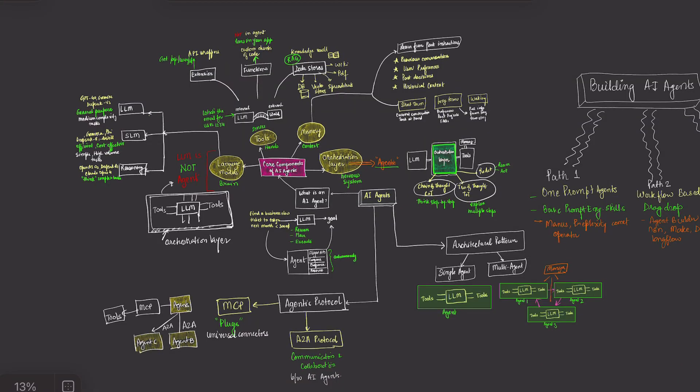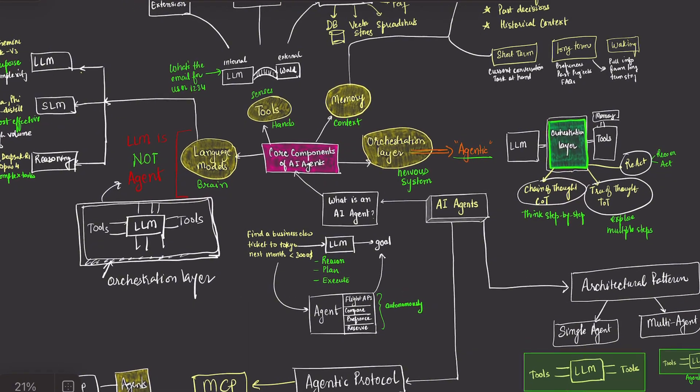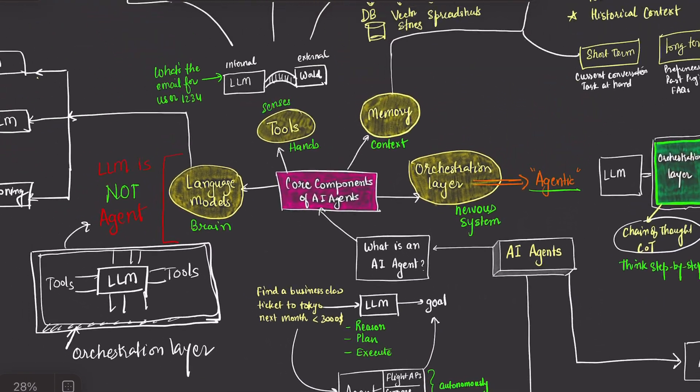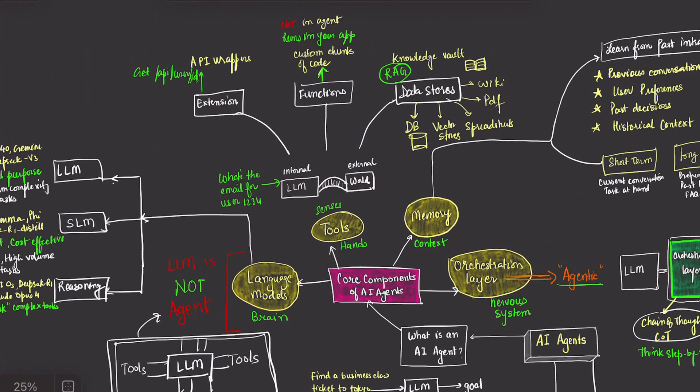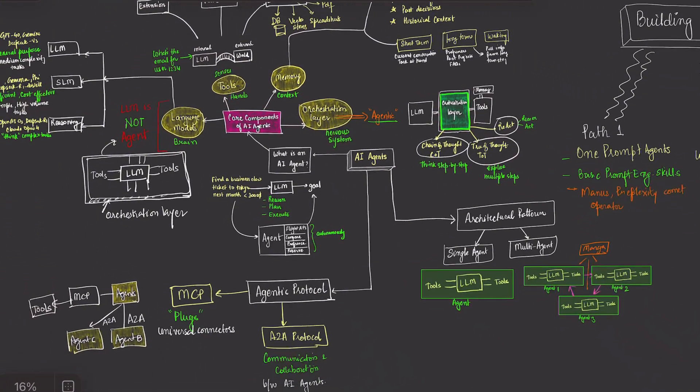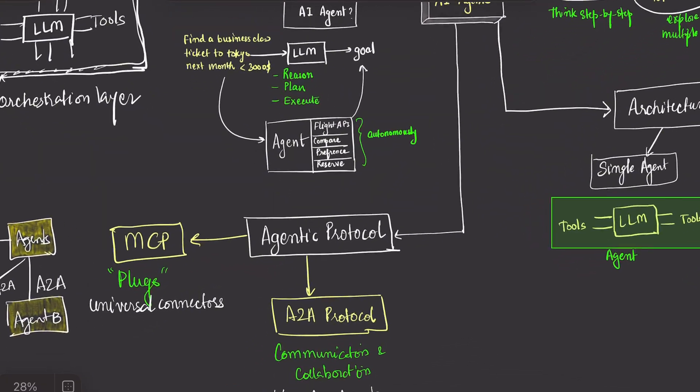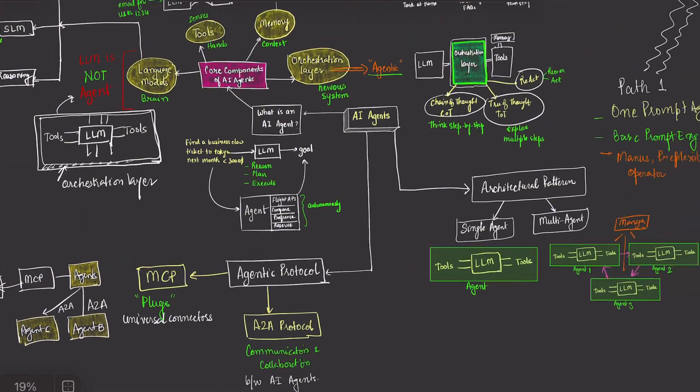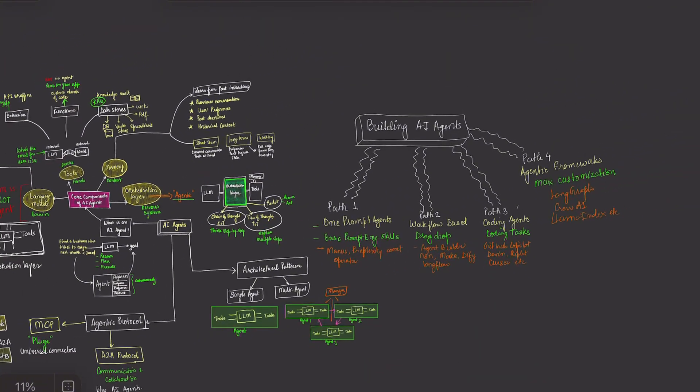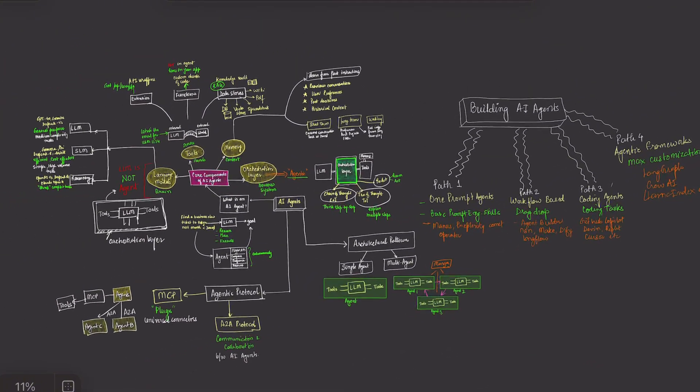And there you have it. AI agents demystified. You now understand the four core components that make every agent work. The language model brain, and the tools that are its hands in memory, that help it learn, and the orchestration layer that ties everything together. You know the critical difference between language models and actual AI agents. And you understand the protocols that let them communicate. And you know exactly which path to take to build your first AI agent.